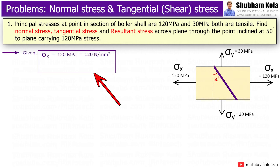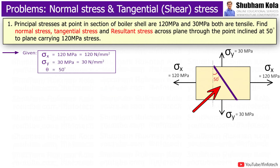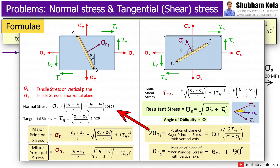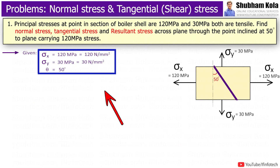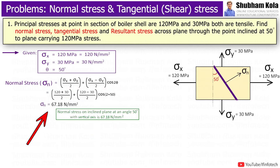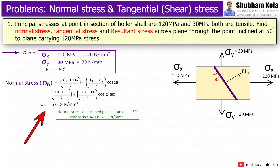Here we write down the given data: tensile stress sigma_x is 120 N/m² and tensile stress sigma_y is 30 N/m². We need to calculate normal stress, tangential stress, and resultant stress on the inclined plane. For normal stress sigma_n, we have sigma_x and sigma_y with the plane inclined at theta = 50 degrees. Putting these values into the formula, normal stress comes out to 67.18 N/m², which is positive, meaning it is away from the body.